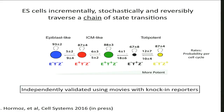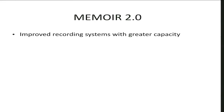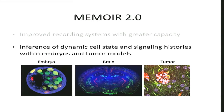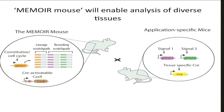Just to finish on the MEMOIR side — this is really a proof of principle, our 1.0 version, but we think this system can do a lot more. We have goals to increase the recording density significantly with improvements to the system. We want to take this into embryos — since it's an ES cell system, we can immediately go into the mouse embryo and look at things like tumorigenesis and embryogenesis. We also have another idea: to create a MEMOIR mouse that would have all the recording components already validated and working, activatable by Cre, which could be mated into application-specific mice — allowing anybody to mate their favorite Cre mouse with this mouse and be able to record signals in tissues of interest.